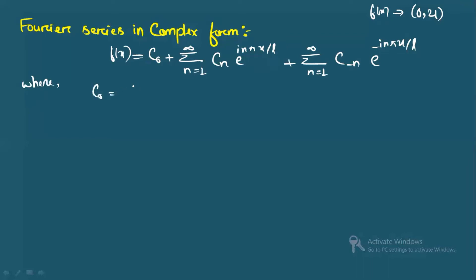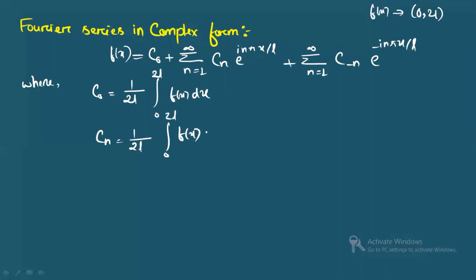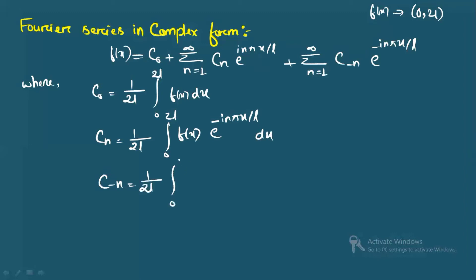The coefficients are: c₀ = (1/2l) ∫₀^(2l) f(x) dx; cₙ = (1/2l) ∫₀^(2l) f(x) e^(−inπx/l) dx; and c₋ₙ = (1/2l) ∫₀^(2l) f(x) e^(+inπx/l) dx. These are the coefficients, and this is how you calculate them for the entire series.